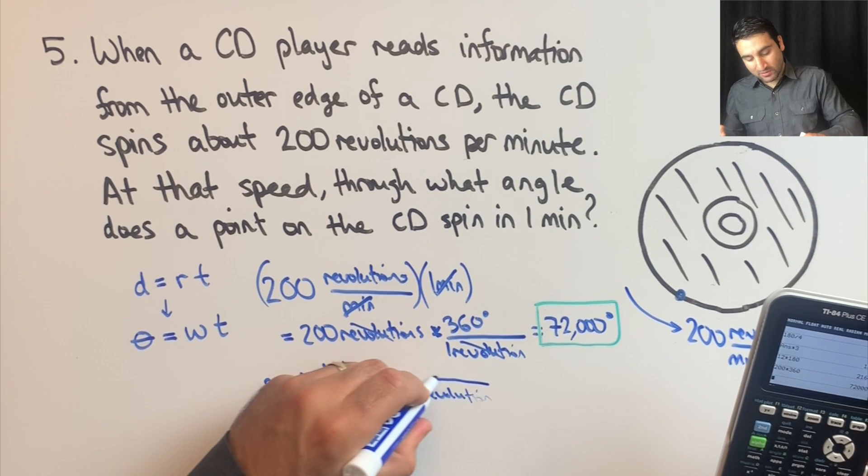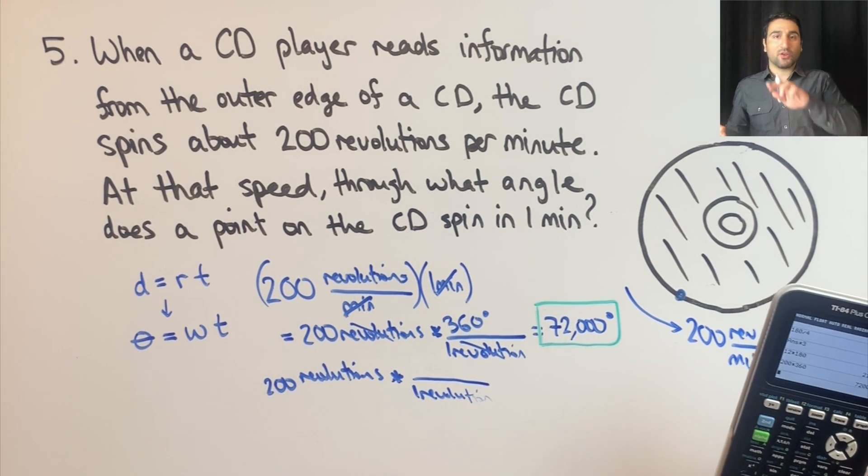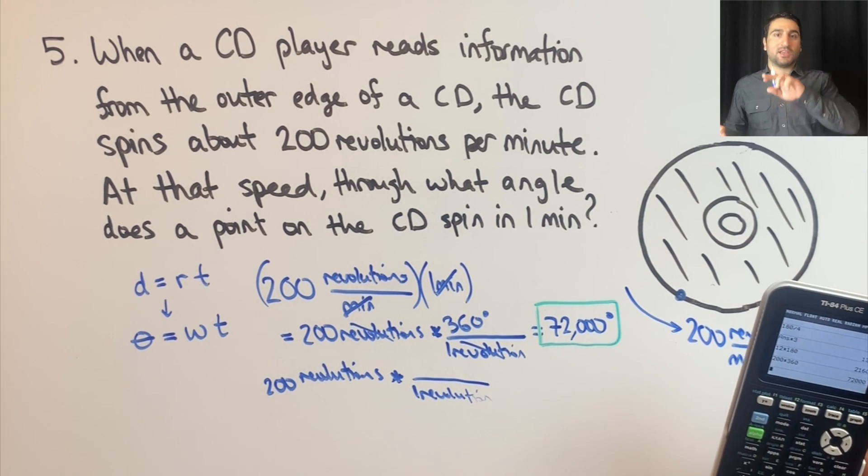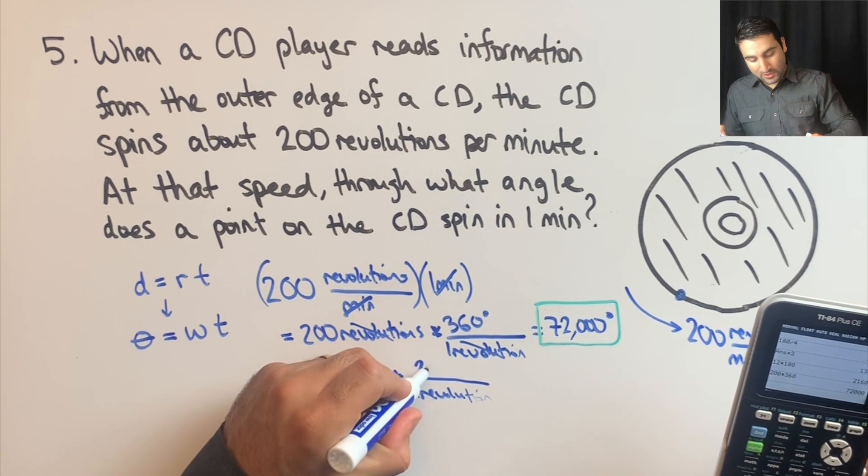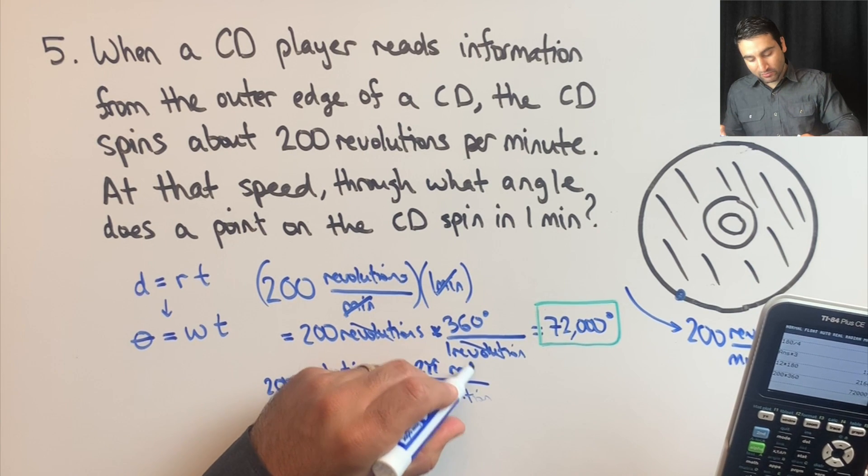What's going to go on top here? What's equivalent to one revolution? It's two pi radians. Two pi radians is once around a circle. So two pi radians.